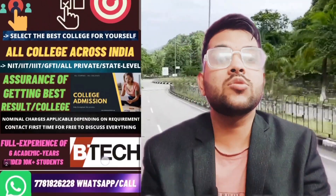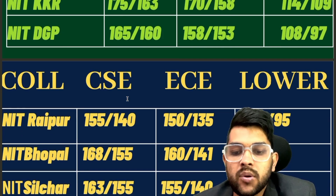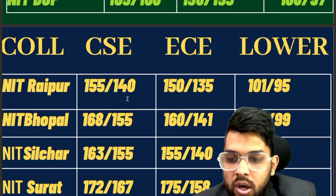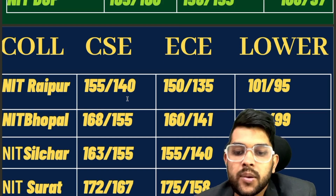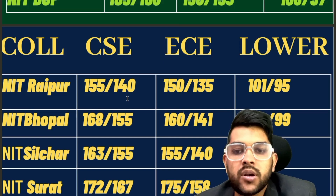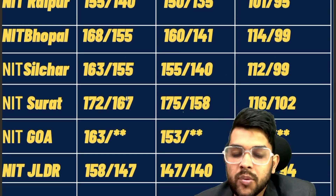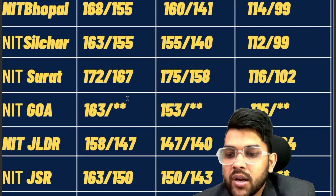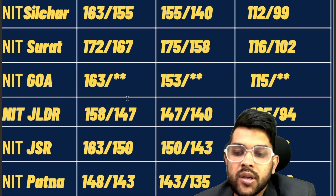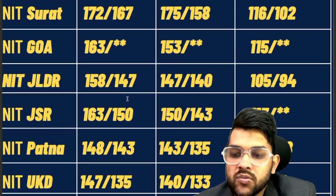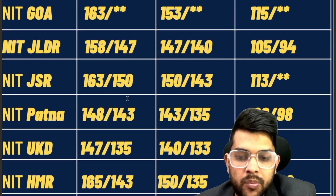For NIT Bhopal: 168, 160, lowest 114. For Silchar: 163, 155, lowest 112. For NIT Surat: 172, 165 — note it is 165 not 175 — and lowest 116 for male, 102 for female. For NIT Goa: 163, 153, lowest 115. For NIT Jalandhar: 158, 147, lowest 105. For NIT Jamshedpur: 163, 150, lowest 113. For Patna: 148, 143, lowest 109. For Uttarakhand: 147, 140, lowest 111. For Hamirpur: 165, 150, lowest 108 marks.